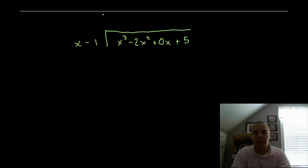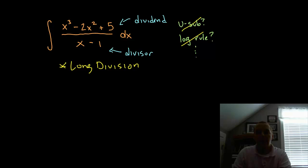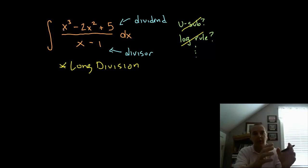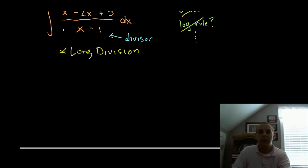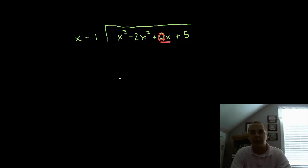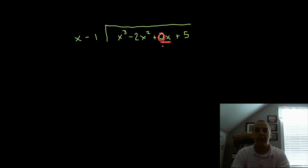One thing to note about the setup: I intentionally left out a term in this example. When you're writing the dividend under the long division bar, you have to include the highest degree x and every lower-order term down to the constants. Here we have an x cubed, an x squared, we're missing x terms, and then a 5. So you need to write a 0x as a placeholder, because eventually we're going to get columns of x cubed, x squared, x, and constants. This is very important — if you don't include that placeholder, you pretty much can't work the problem. This applies to the dividend; the divisor doesn't need placeholders.